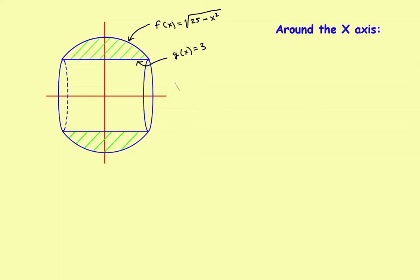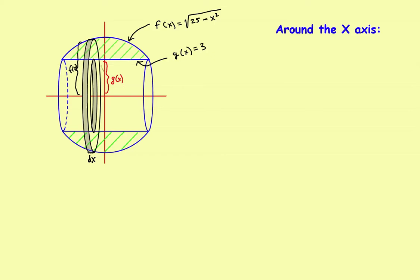We'll divide the solid up into disks and washers. Let's take a look at just one washer inside this interval. The width of the washer is dx. The height from the axis up to the outer edge is f of x, and the height from the axis up to the inner edge is g of x. So f of x minus g of x gives you this washer shape.